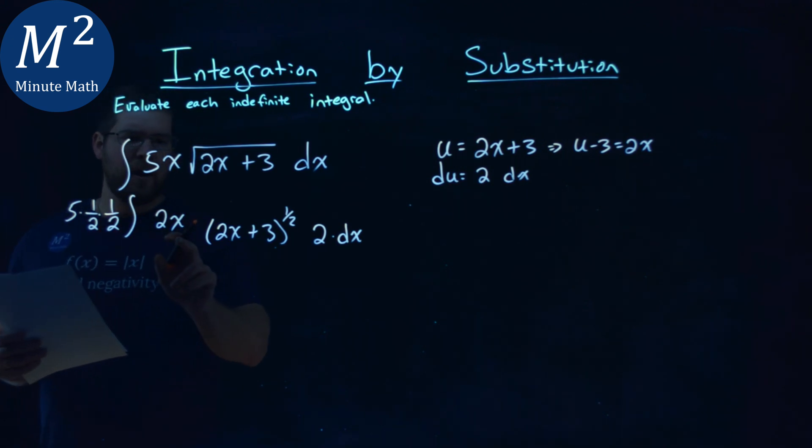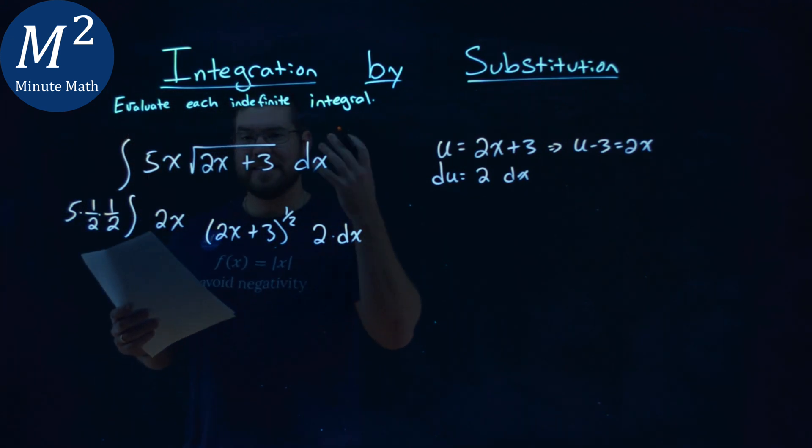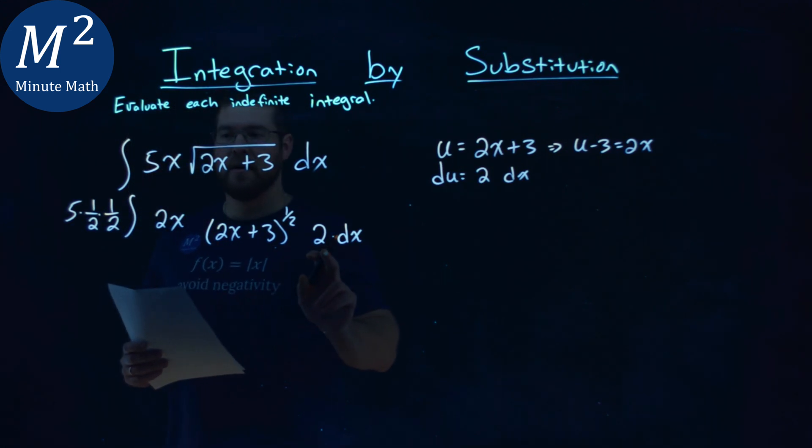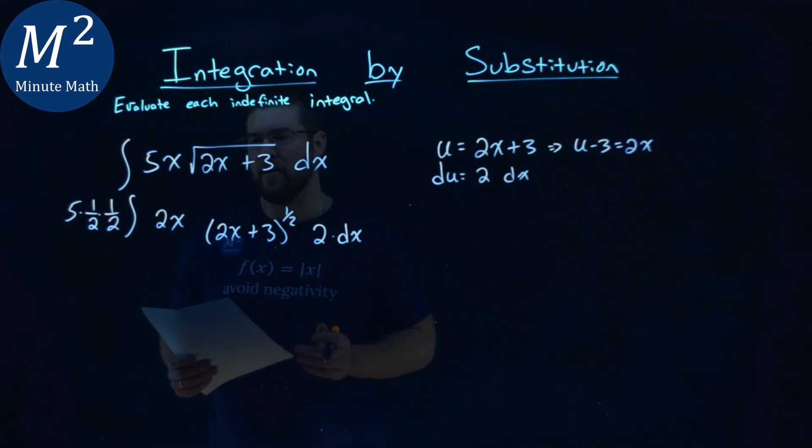And so right now, we have actually a problem, an integral that's exactly the same. Let's double check that. 5 is still there. 1 half and a 2 cancels out, so we just have the x. 1 half and this 2 cancels out, so we're good there, and everything's just the same, right? Square root and 1 half power is the same.